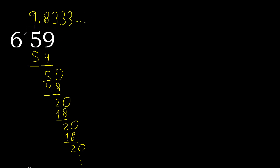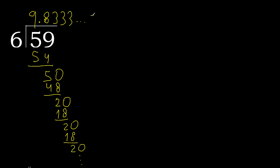Finished. 59 divided by 6 is — after the point: 3 repeating. Therefore, like this: 3 repeating.